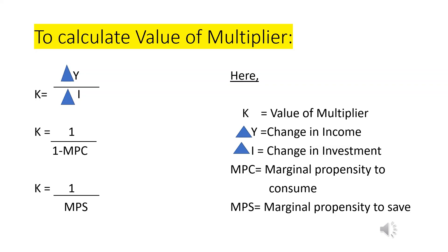The value of the multiplier can be found using three formulas. The first formula is: Multiplier (K) = Change in Income / Change in Investment. The second is: K = 1 / (1 − MPC), where MPC stands for Marginal Propensity to Consume. From the second formula, we can derive the third, because money not spent in the economy is saved — so 1 − MPC = MPS. Therefore, the third formula is: K = 1 / MPS, where MPS stands for Marginal Propensity to Save.